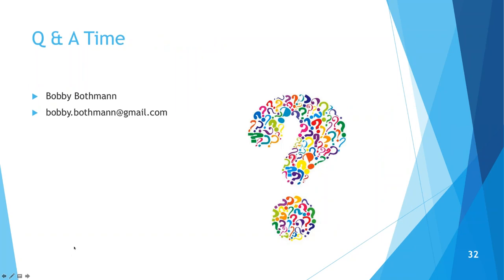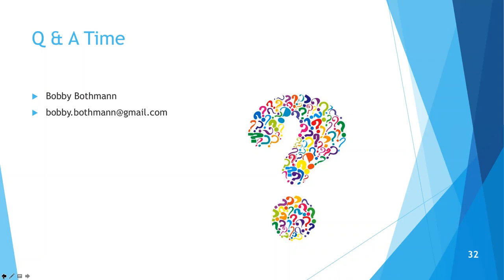That concludes the slides, and we are ready to do the Q&A session. We have a few questions primarily around what to do if you don't have access to Classification Web. If you don't have Classification Web, the subject headings are freely available as PDF files arranged by alphabet. The site authorities.loc.gov is also freely available and parallels catalog.loc.gov, allowing you to search the majority of LCSH vocabulary, though it doesn't contain some free-floating subdivisions.